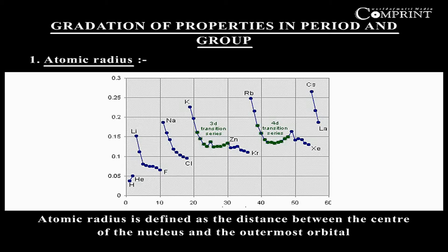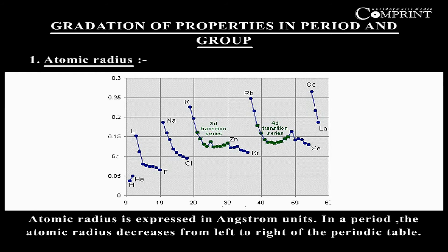Atomic radius is defined as the distance between the center of the nucleus and the outermost orbital. Atomic radius is expressed in angstrom units.